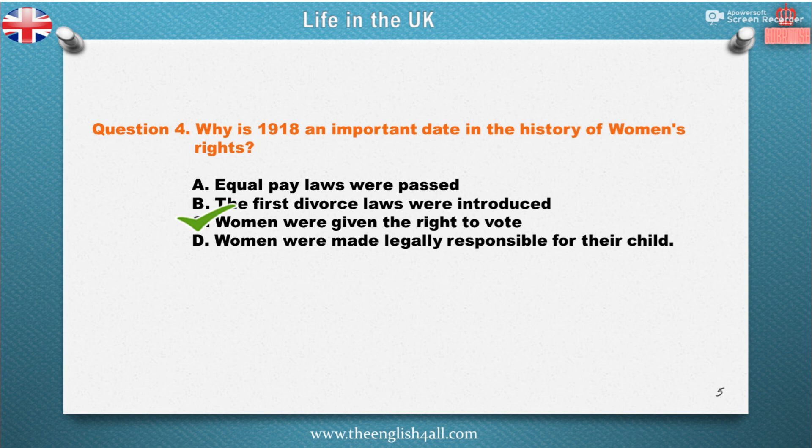Also good to know: by 1918 most of these reforms had been adopted. The voting franchise was also extended to women over 30, and then in 1928 to men and women over 21. In 1969, the voting age was reduced to 18 for men and women.